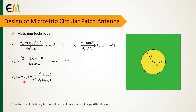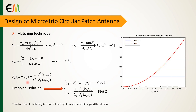The last step is computing the coaxial feed location, defined by the rho-0 parameter. For this purpose we use this equation, where the input impedance at rho equal to rho-0 is the coaxial cable impedance. This relation is a non-linear equation, and one of the simplest solutions is the graphical solution — we plot these relations and the intersection point is the desired value of rho-0.